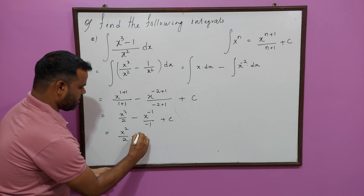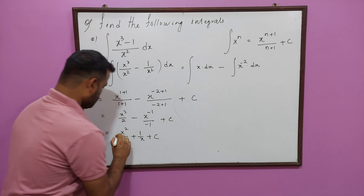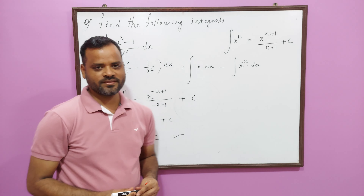For the second term, we have x to the power minus 2, so the value of n is minus 2. Its value will be x to the power minus 2 plus 1, divided by minus 2 plus 1, plus a constant of integration. This gives x squared over 2, minus x to the power minus 1 divided by minus 1, plus C, which equals x squared over 2 plus 1 over x plus C.